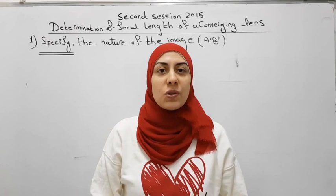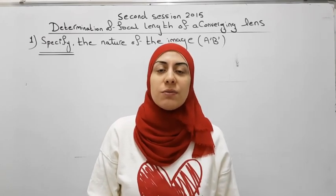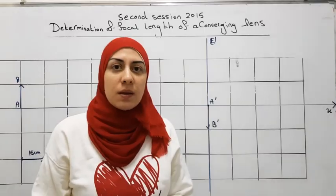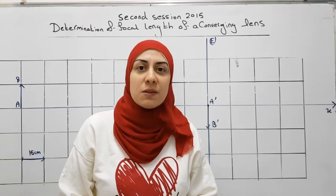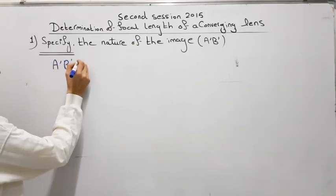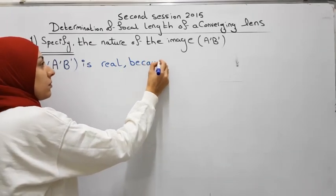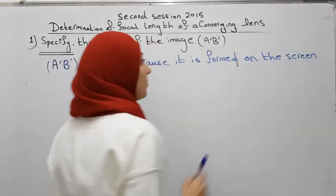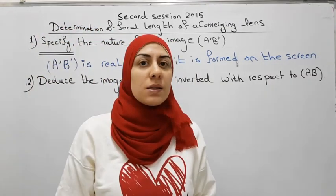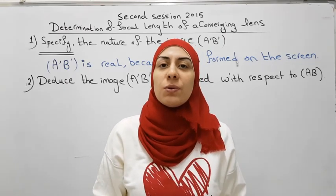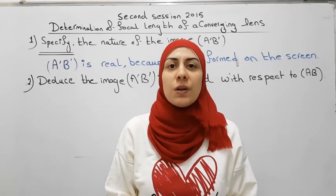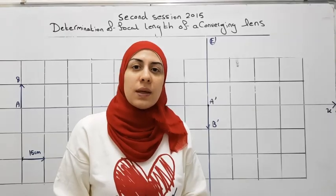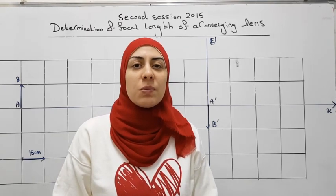In this part, we want to specify the nature of the image A'B'. Specify means that we have to indicate and justify. The image A'B' is real because it's formed on the screen. We also want to deduce that the image is inverted. Deduce means that you have to draw new information by using previously proven or given ones. A'B' is inverted because all real images are inverted.